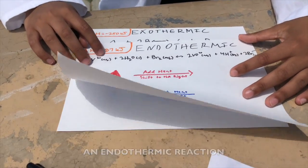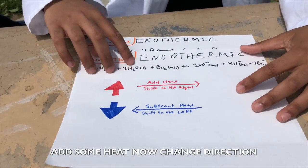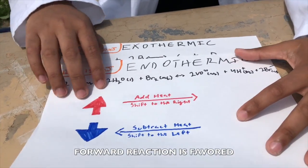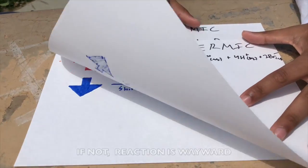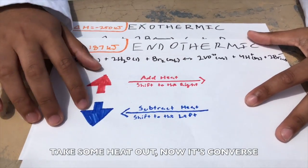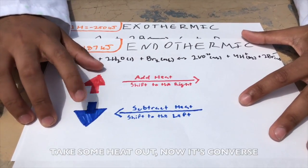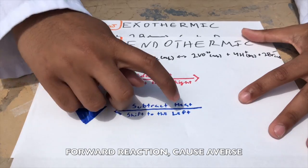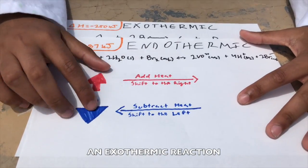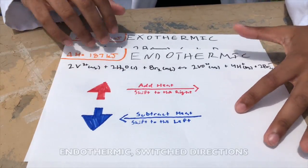In an endothermic reaction, add some heat — now change direction. Forward reaction is favored. If you take some heat out, now it's the reverse — forward reaction goes the other way. Endothermic direction.